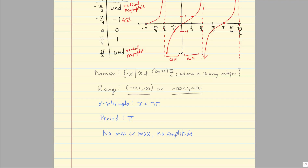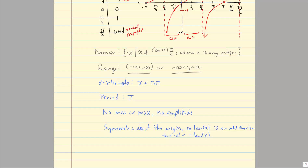There are no minimum or maximum values, and because it has no min or max, we can't calculate an amplitude — so it has no amplitude. The graph is symmetric about the origin, which means it's an odd function. Being an odd function means that tan(−x) = −tan(x), the same as for sine. Tangent is sine over cosine, and tangent and sine are both odd functions. Those are the characteristics of the tangent graph.